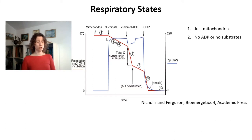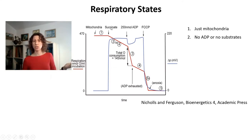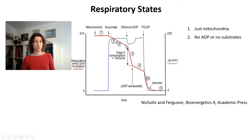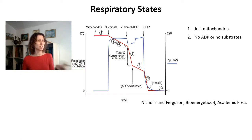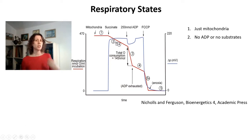The next state is respiratory state two. State two is a little confusing in the literature. Most commonly, state two is defined as the addition of substrate — for example succinate, pyruvate malate, or a different substrate — but no ADP is added. If you give mitochondria a substrate but they still don't have ADP, they will start to have some electron transport and oxygen consumption, but how much depends on how much contaminating ADP is already in the preparation. That's why state two is a somewhat dirty condition — you never really know how much oxidative phosphorylation is actually happening.